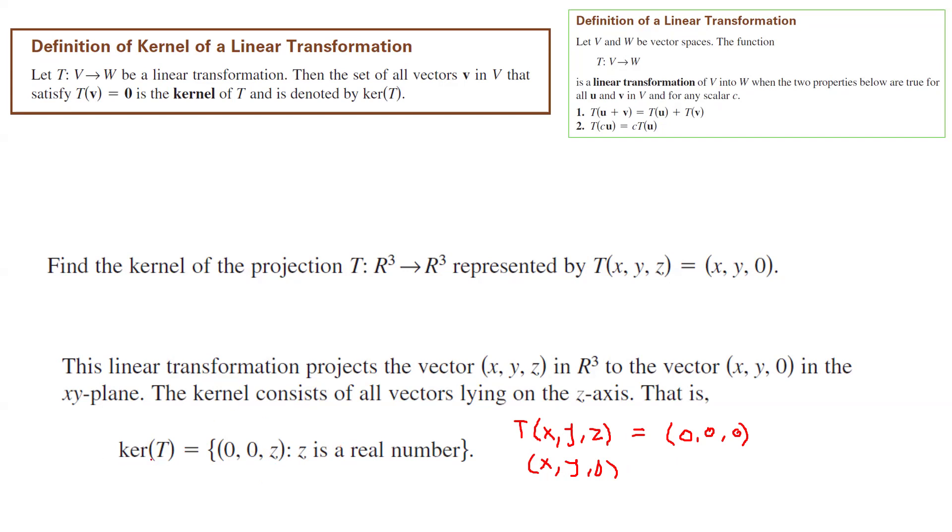So the kernel of T is all vectors in the form of (0, 0, z) such that z is a real number. So basically, the kernel of T is the z-axis. So if someone asks you to describe the kernel of T, you're going to say that the kernel of T is just the z-axis itself.